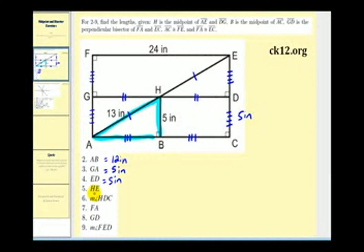Next we want to find the length of HE. HE is this segment here, and since H is the midpoint of segment AE, and AH is 13 inches, HE must also be 13 inches.